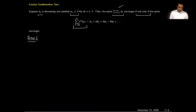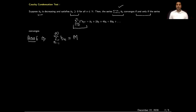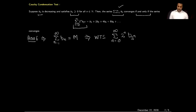First, I will prove the forward direction. In the forward direction, we are given that the series summation from 1 to infinity of B_n is a convergent series. We can assume the sum is capital M, where M is a real number. What I need to show is that the series, with n starting from 0 to infinity of 2^n * B_{2^n}, is also a convergent series.